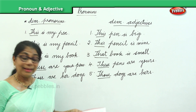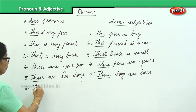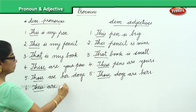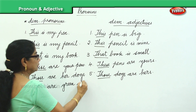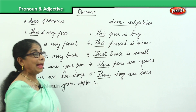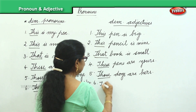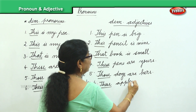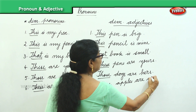'These are green apples' is the demonstrative pronoun. And in demonstrative adjective, you will say 'These apples are green.'